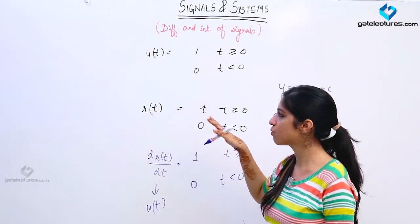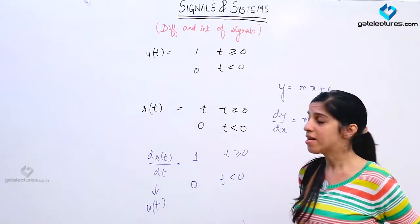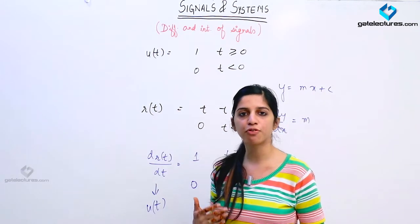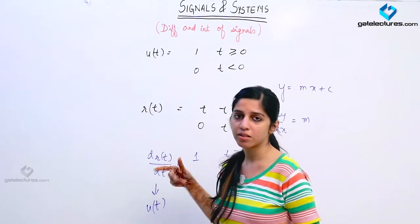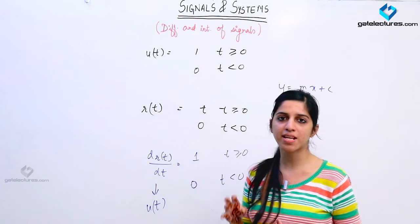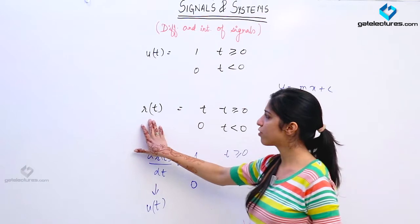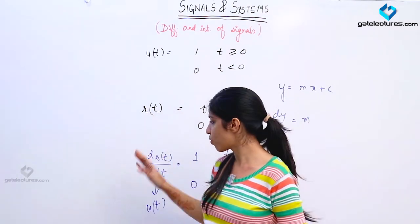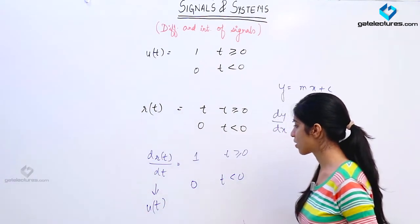Now suppose we have a ramp function which has a slope other than 1 — some different slope. Then what are we going to obtain? We are going to obtain a step of a different size — not a unit step, but a step of different size. Only the step size is going to change according to the slope of the ramp function. Also, if this ramp function is shifted, then the instance of slope change is going to tell you the instance of step change.